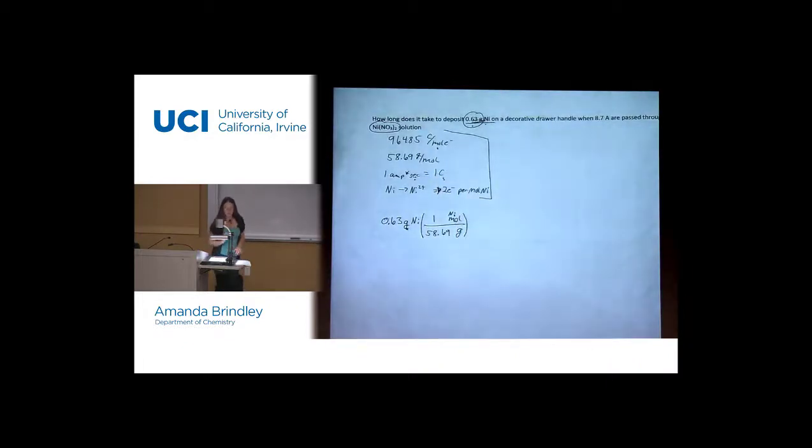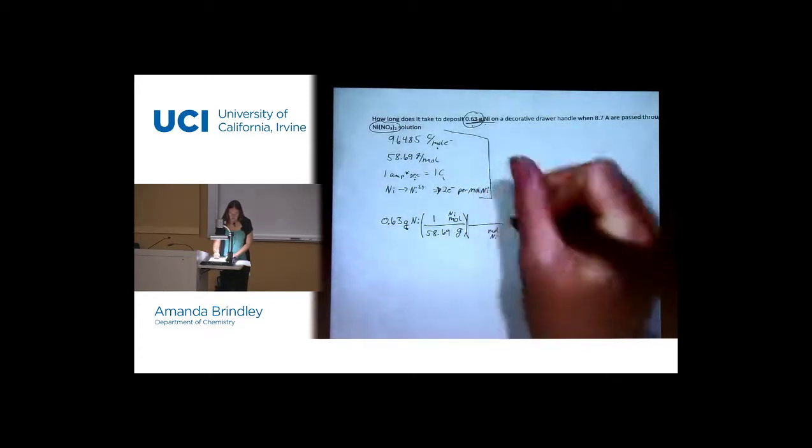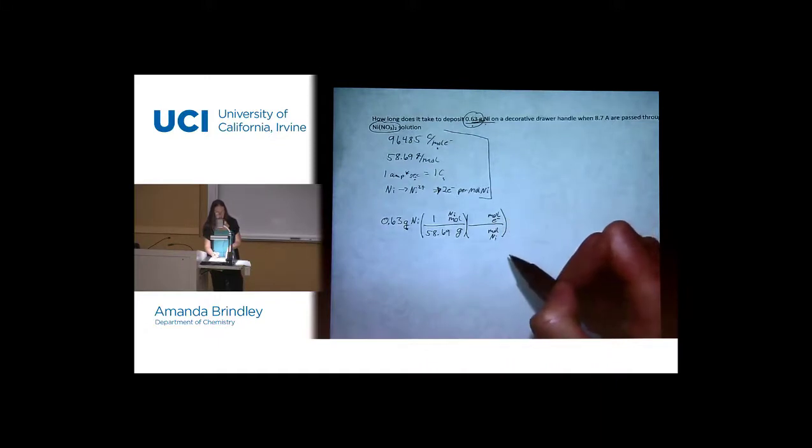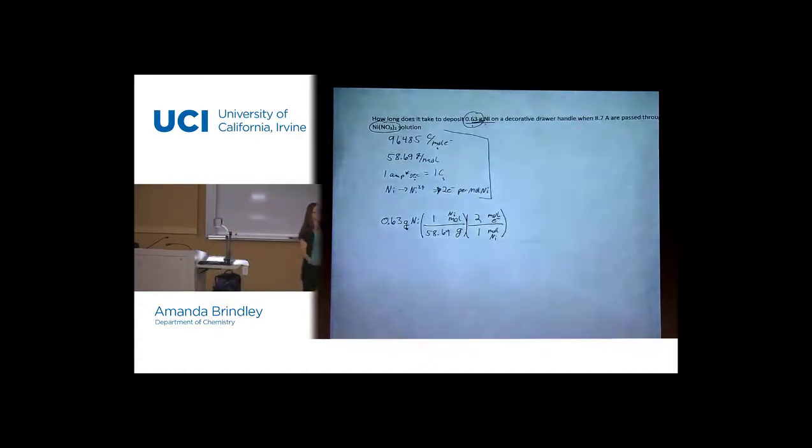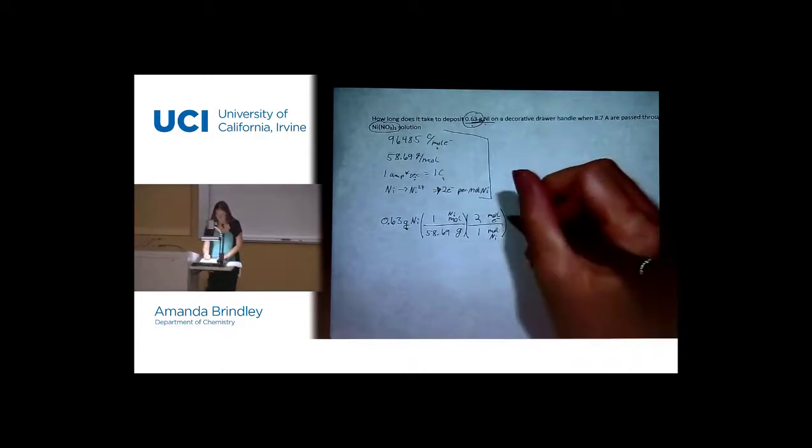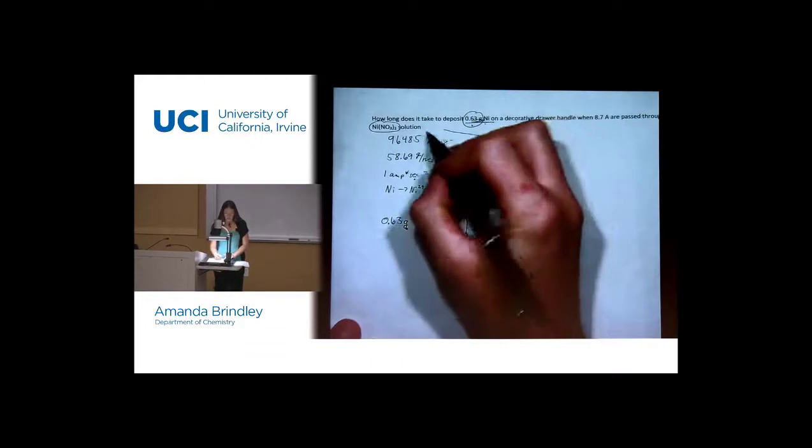I'm going to put moles of nickel here just so we're clear. All right. Well, now that we have moles of nickel, we can get to moles of electrons. Where does the two go? Does it go in front of the electrons or the nickel? The electrons, right? Because we need two moles of electrons to move to get one mole of nickel. All right.